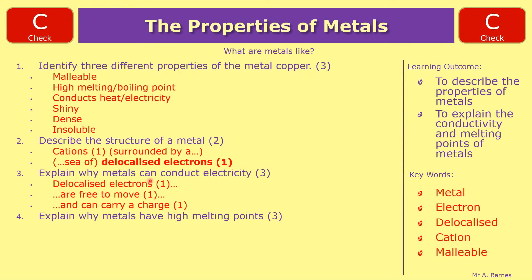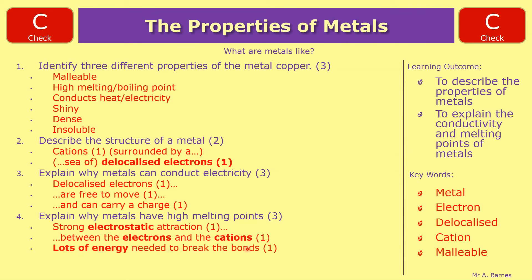Explain why metals have high melting points. Strong electrostatic attraction. It's that electrostatic which is one of the key words you've got to learn for this exam. Between the electrons and the cations. You could have put delocalised electrons in here. It doesn't matter as much. And lots of energy needed to break the bonds.